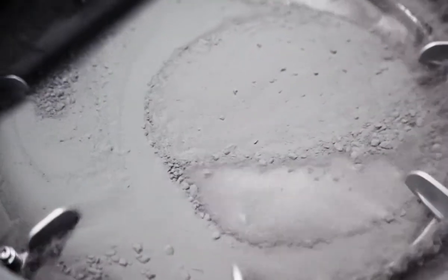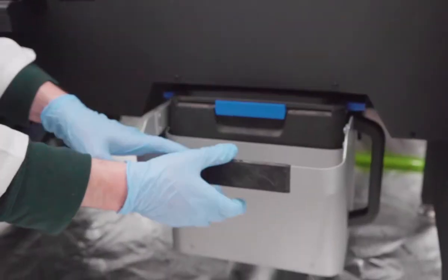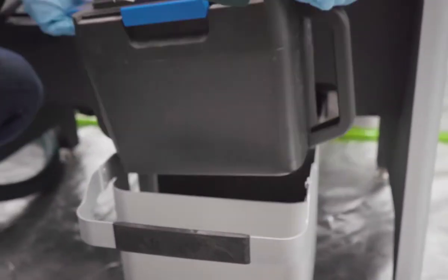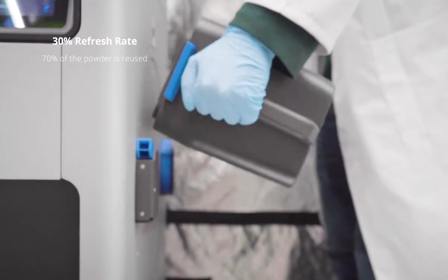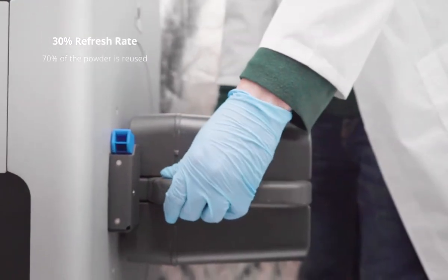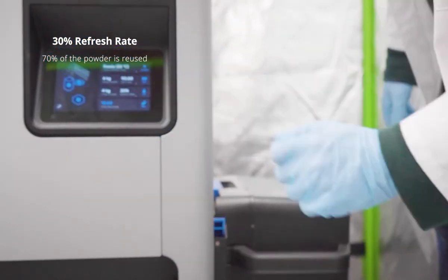Let's get that sifted powder back in the printer via the powder cartridge. This is another area where Formlabs shines when compared to other players in the space. The Fuse 1 supports a 30% refresh rate, which means that 70% of the powder that fills the chamber can be recycled from previous builds. Now, it's time for the spin cycle.